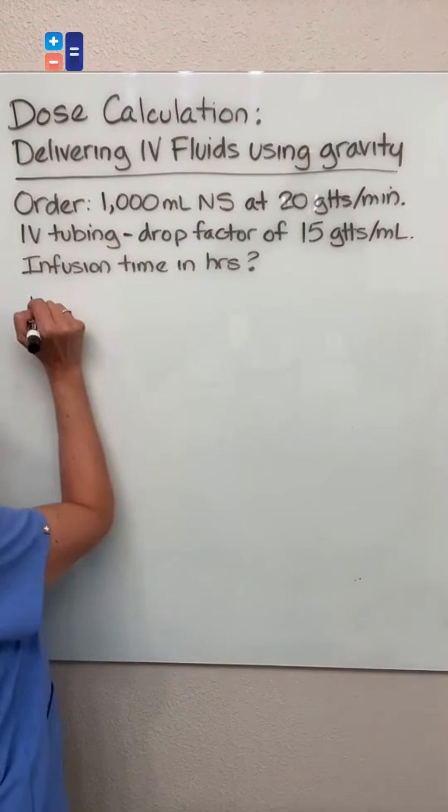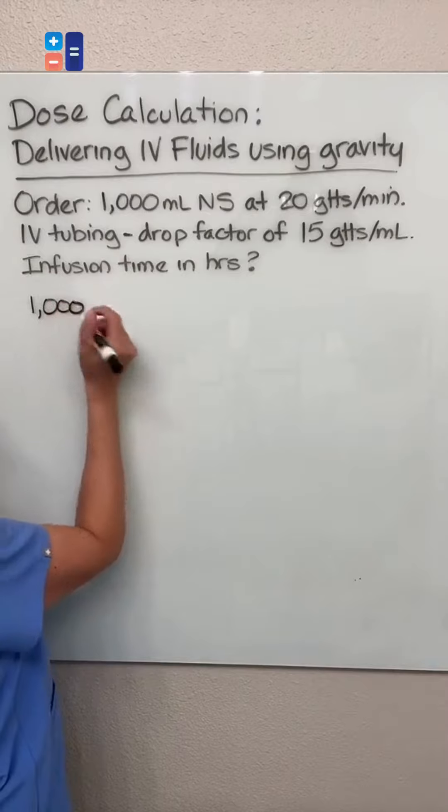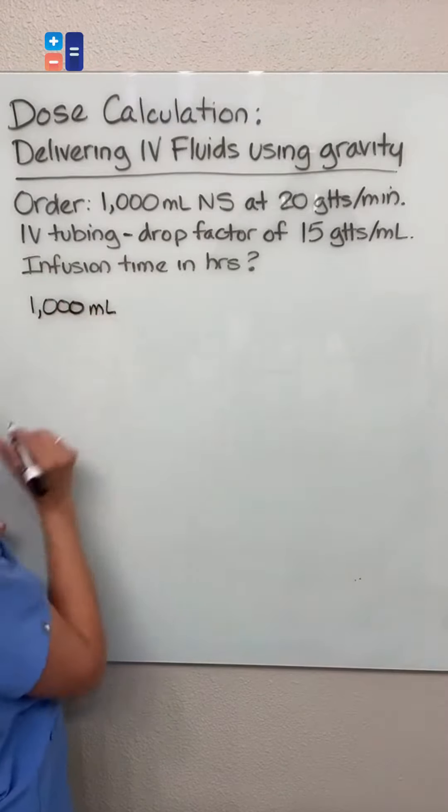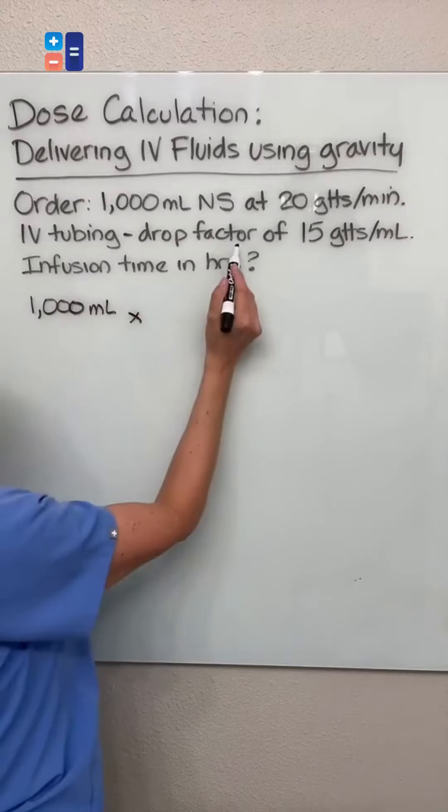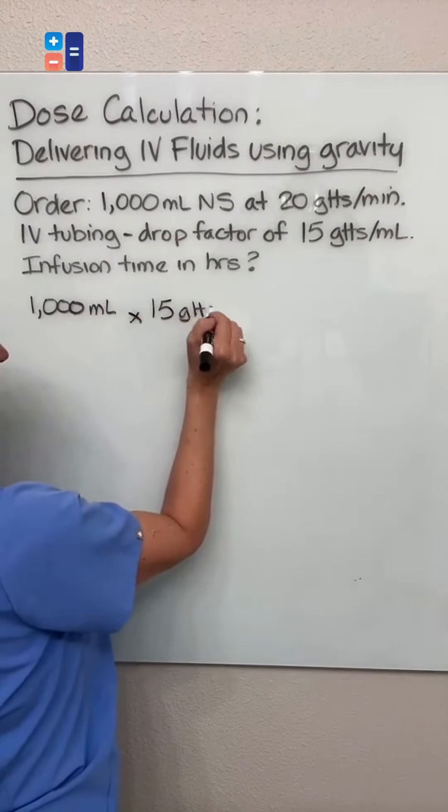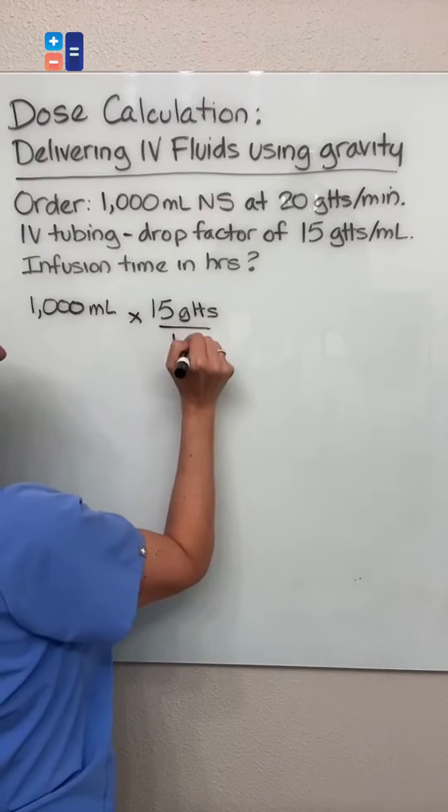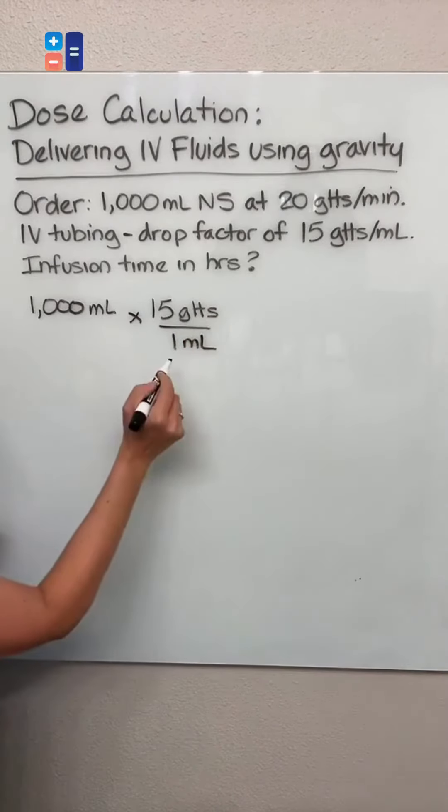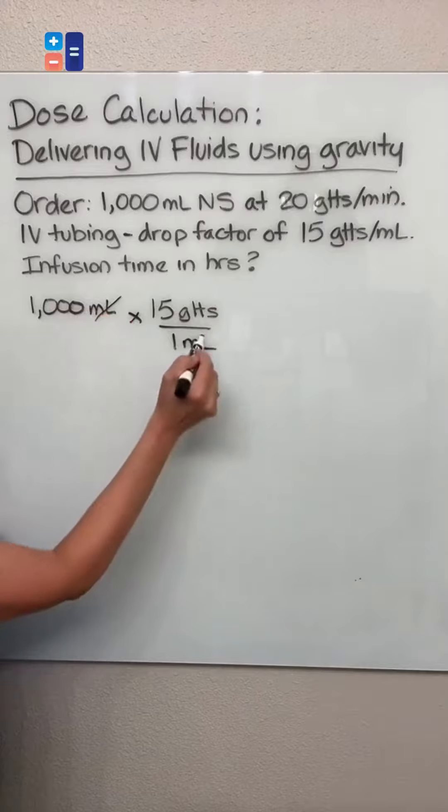So we're going to start with our ordered volume, which is 1,000 mL. Then we're going to multiply that by the drop factor of our tubing, which is 15 drops per mL. And you can see I set it up so that my milliliters will cross off.